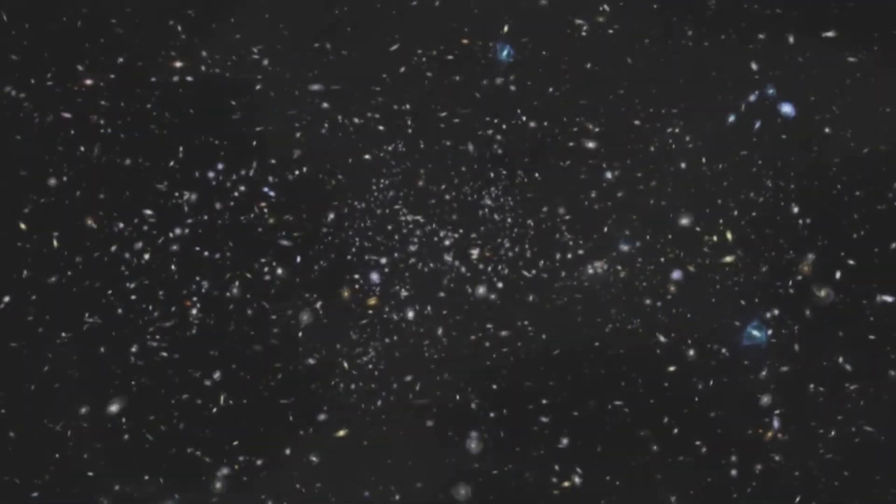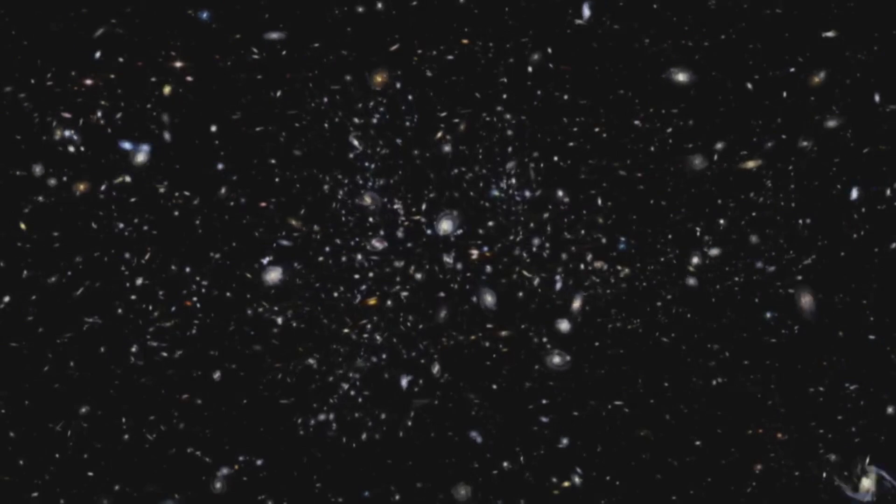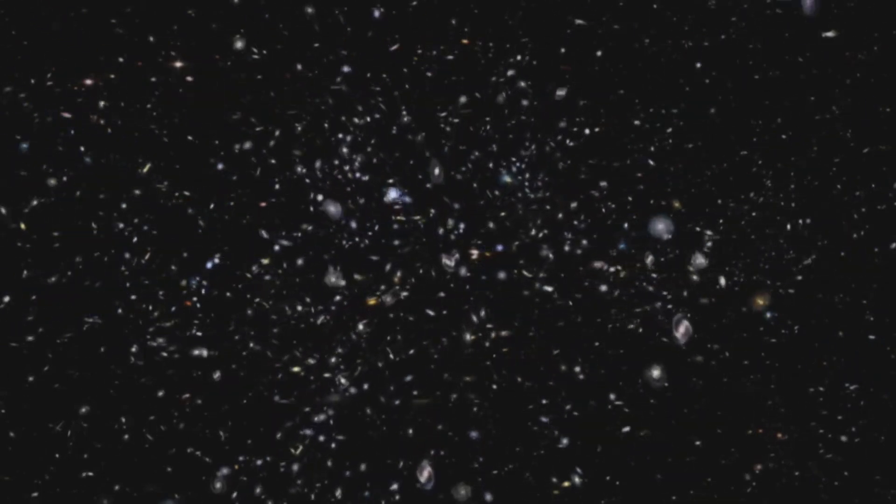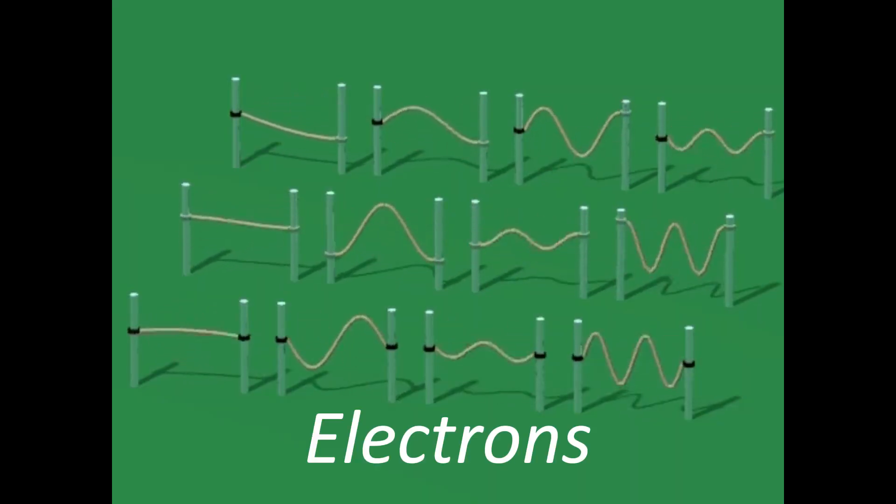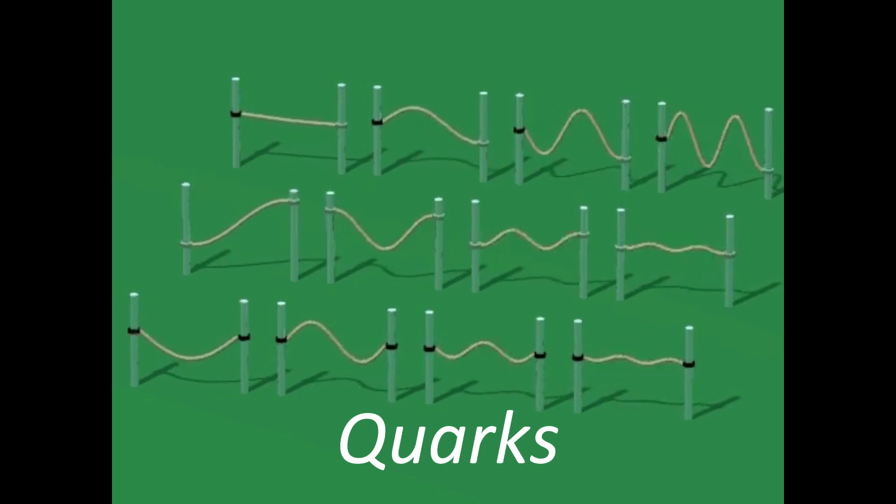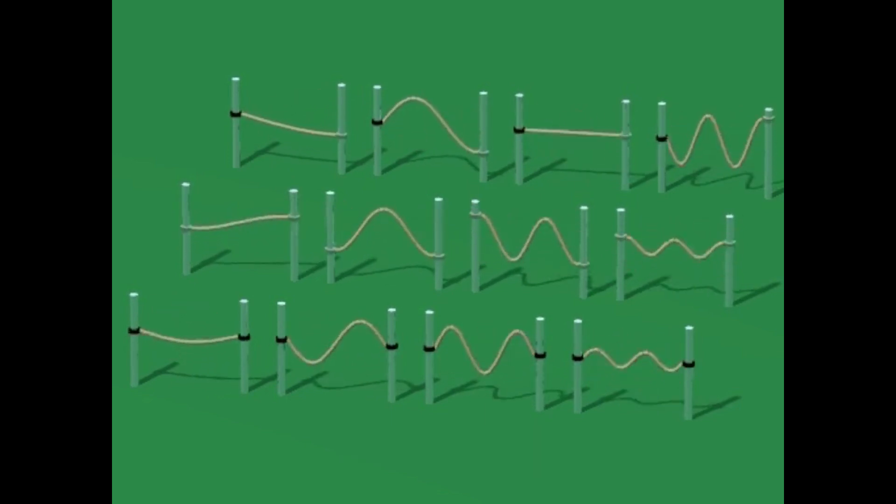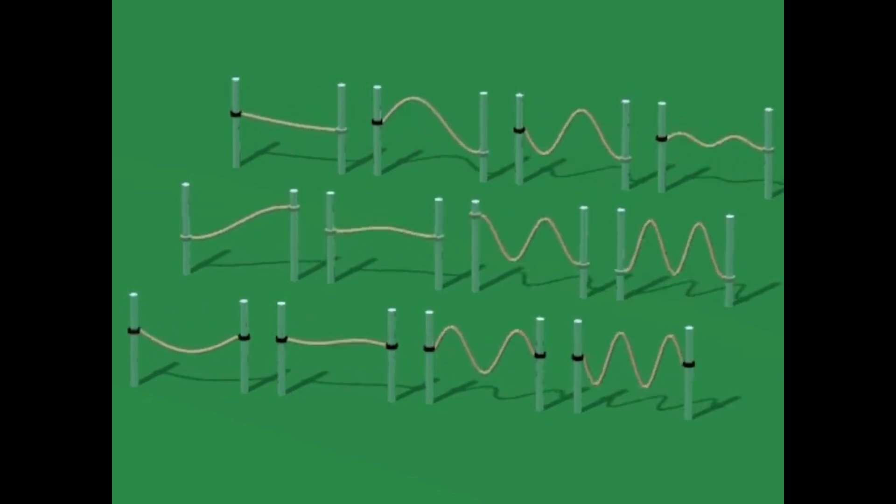Now, we dive into the quantum world. And here is where things get really strange and fascinating. In quantum field theory, the universe isn't made of particles passing around in space. It is made of fields. And what we call particles, like electrons, protons and quarks, are just ripples or excitations in these underlying fields.